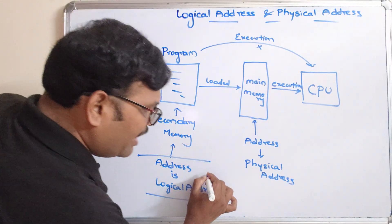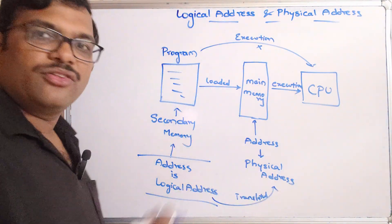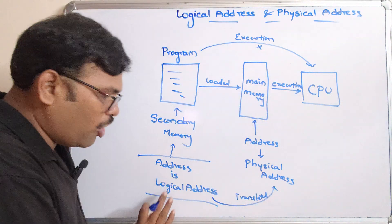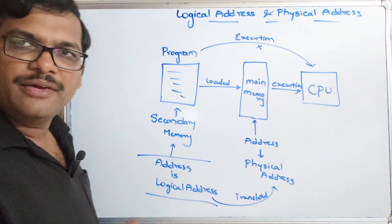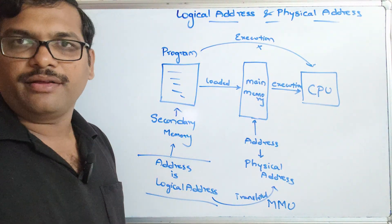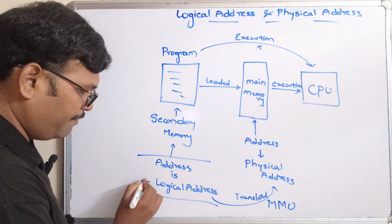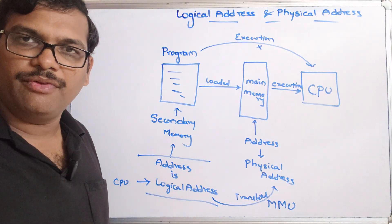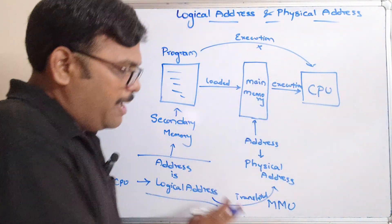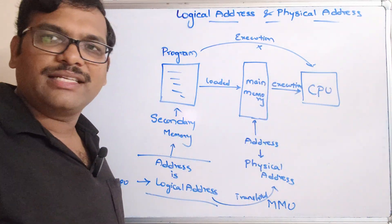So logical address is the address of a program residing in secondary memory, and physical address is the address of a program in main memory. This logical address will be translated to the physical address, because the program available in secondary memory is loaded into main memory. The translation is done by the MMU — memory management unit. The logical address is generated by the CPU, but the CPU cannot access the logical address directly; the MMU converts it into a physical address so it can be directly accessed by the CPU.